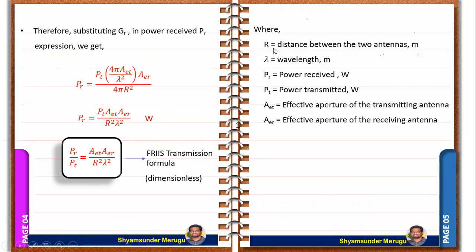Let us look at the various terms that appear in the Friis transmission formula. R is the distance between the antennas in meters. Lambda (λ) is the wavelength in meters. PR is the power received in watts. PT is the power transmitted in watts. AET is the effective aperture of the transmitting antenna and AER is the effective aperture of the receiving antenna, both measured in meters squared.